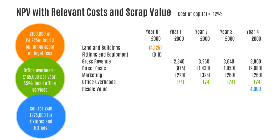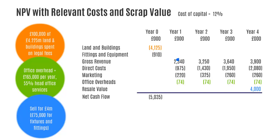You may want to rewind to refresh your memory of the first step, which is calculating the net cash flows — finding the difference between cash inflows and outflows in each year. For year zero we've got two cash outflows, so adding those together we find the net cash flow to be £5.035 million. For year one we've got one cash inflow of £2.34 million and then three cash outflows, which we deduct from our inflow to find a net cash flow of £1.07 million. We do exactly the same for years two, three and four to find the difference between cash inflows and outflows.